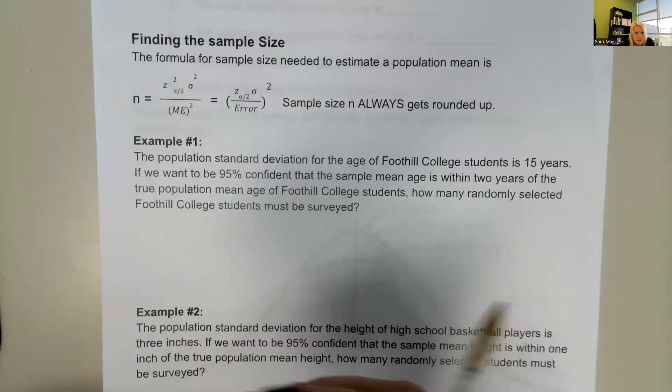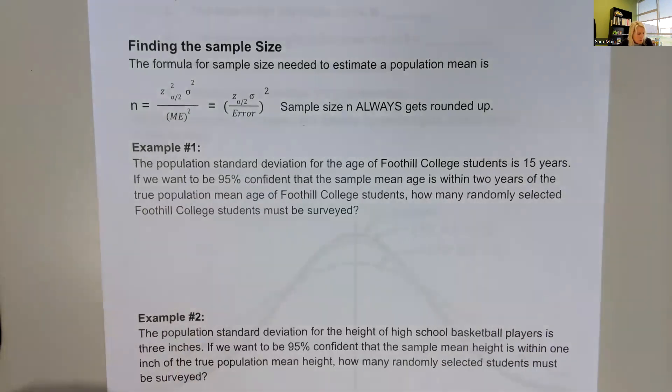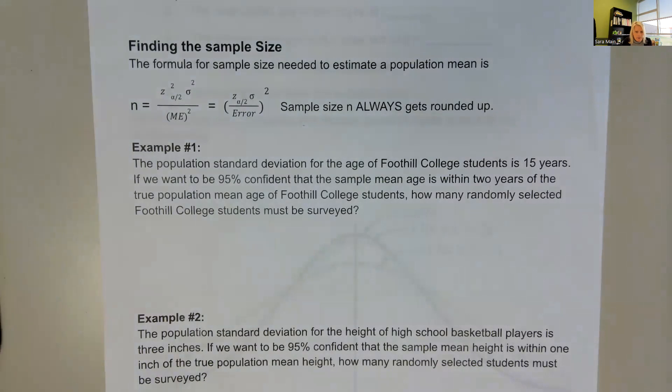The population standard deviation for the age of Foothill College students is 15 years. If we want to be 95% confident that the sample mean age is within two years of the true population mean age of Foothill College students, how many randomly selected Foothill College students must be surveyed?